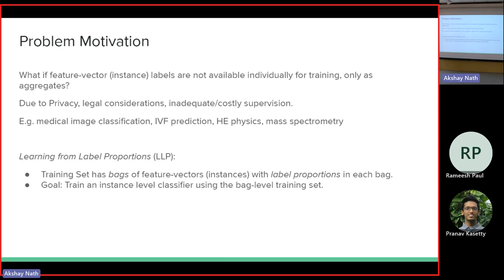This is a slightly different situation from seeing noisy labels — there's no noise here. Your label proportions are consistent with your unknown classifier. There's no actual noise. Now, if the bag is really big and you know that half are zero and half are one, but there are multiple bags, you can look at those bags and try to figure it out. Bags could also be overlapping, so maybe you can add and subtract bags. This is the setup for learning from label proportions.